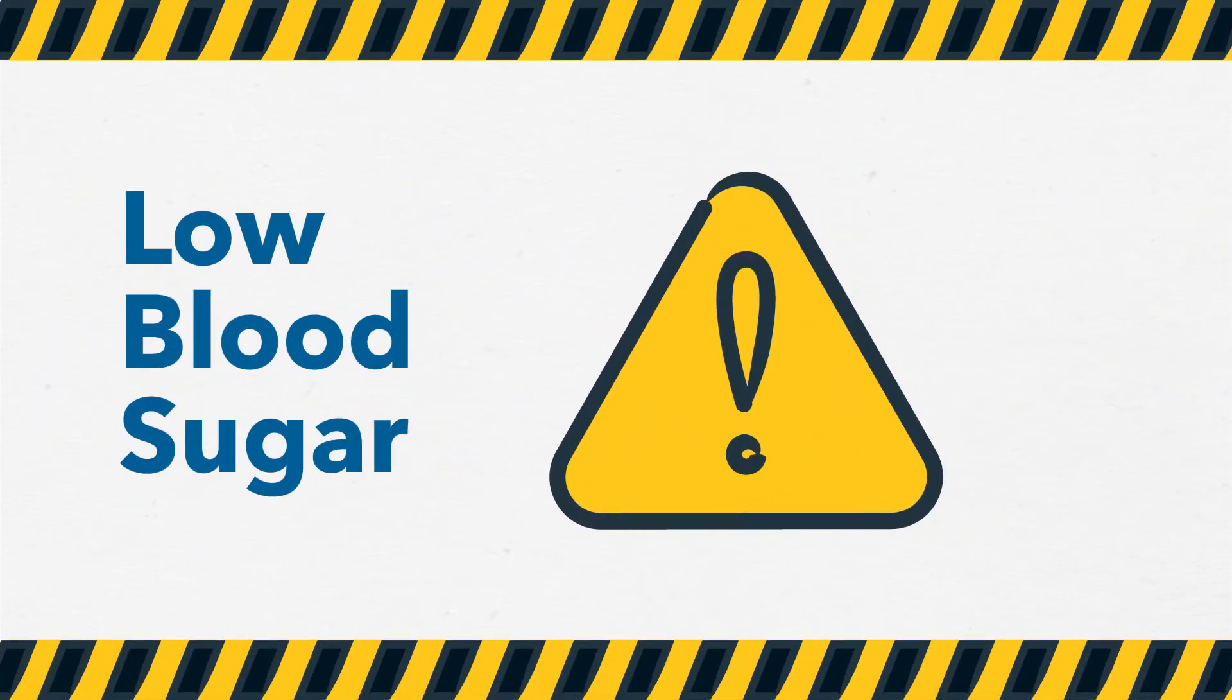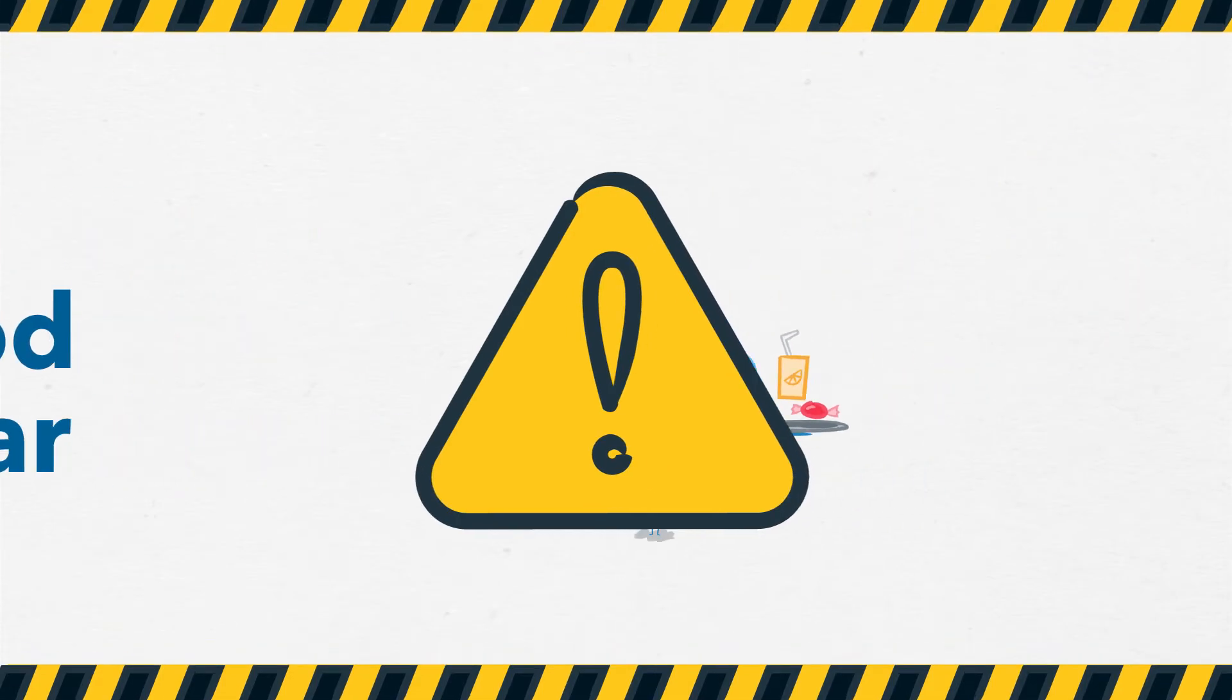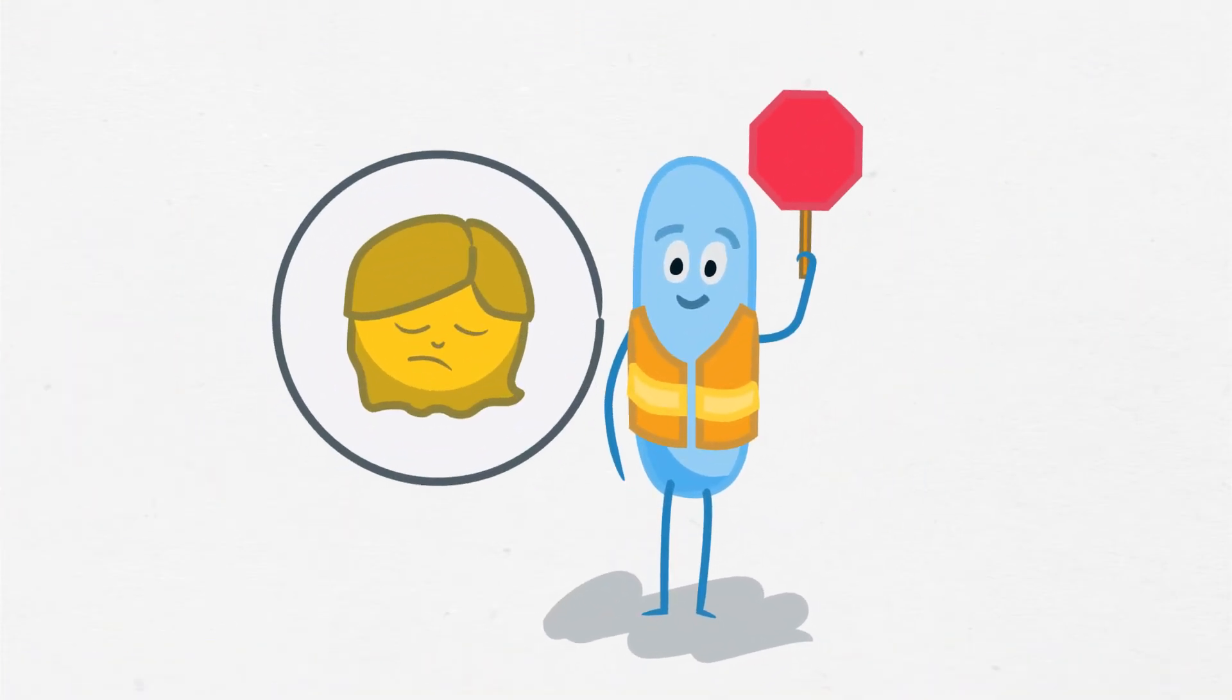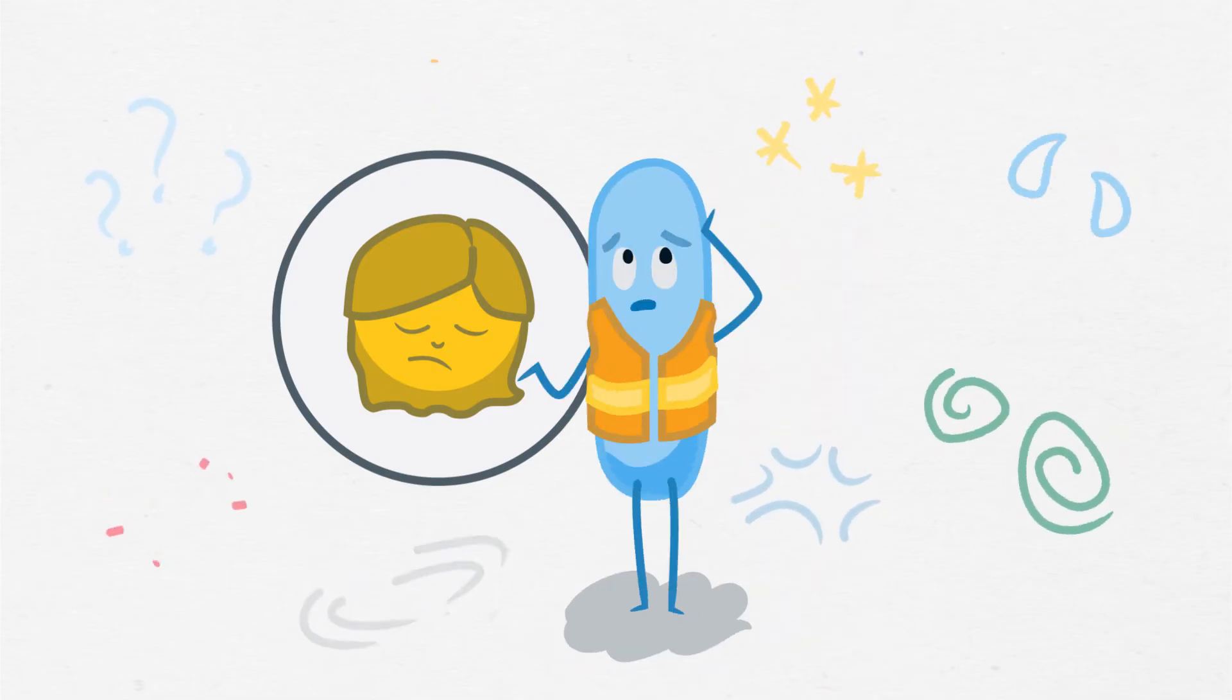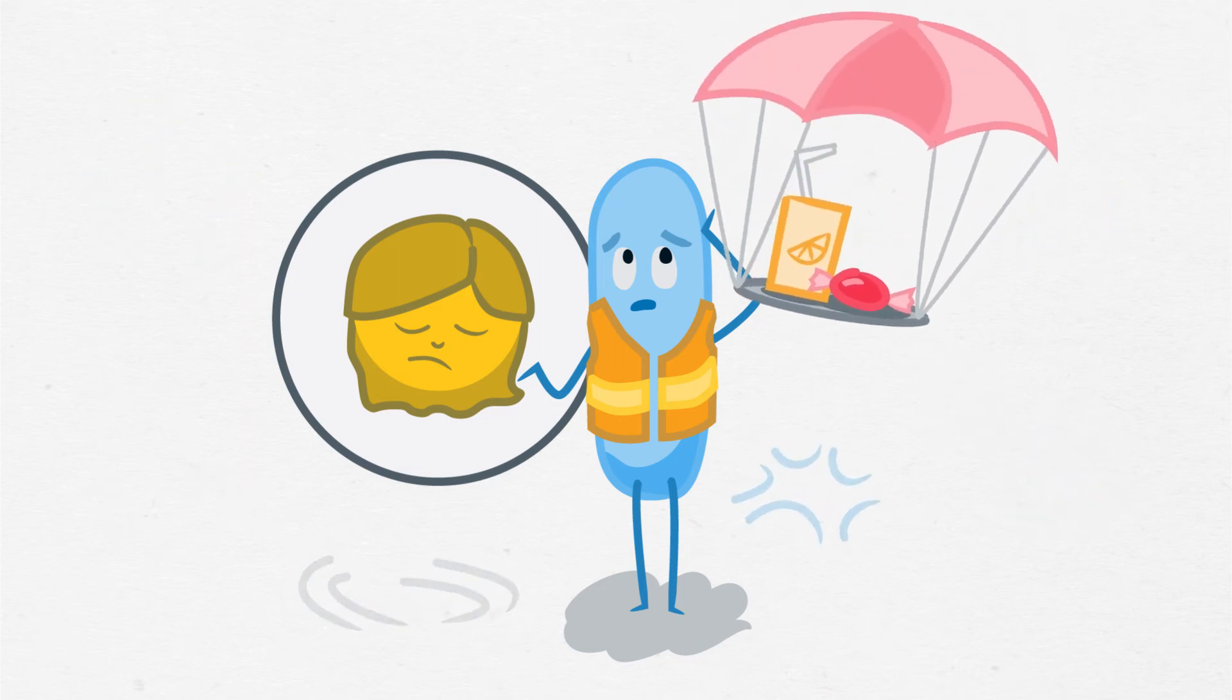Low blood sugar must be treated right away with a fast-acting sugar like juice or candy. It's not safe to send a student to a different location or leave them alone if you think their blood sugar is low. If you suspect a low but aren't able to check, treat it anyway.